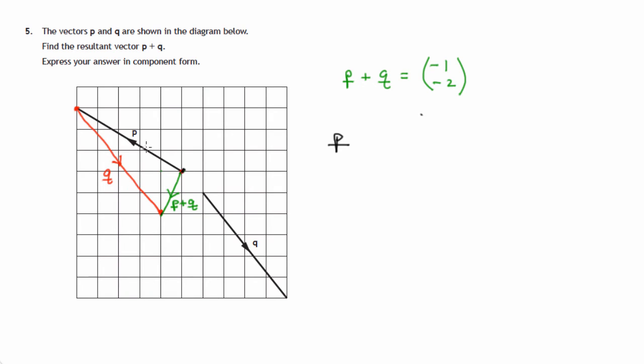So we're starting here, finishing here. We've gone 5 to the left and 3 up. So its components will be negative 5 in the x direction and 3 in the y direction. 5 to the left, 3 up.